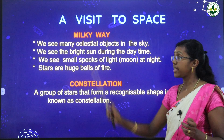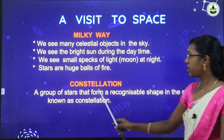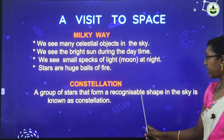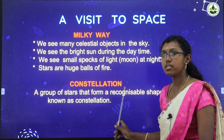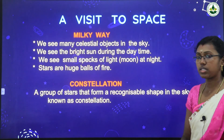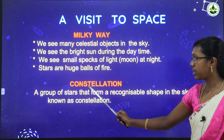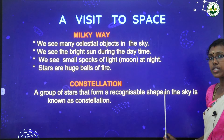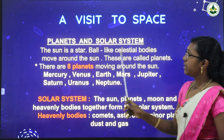Then, constellation. Constellation means a group of stars that form a recognizable shape in the sky. The recognizable shape is the important part. You have to learn this sentence: 'A constellation is a group of stars that form a recognizable shape in the sky.' This is very important.